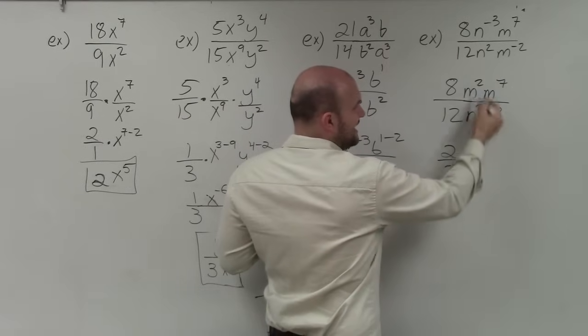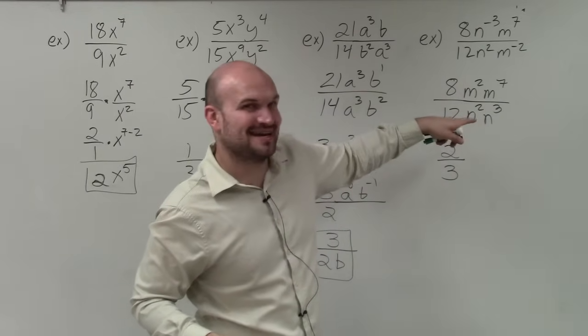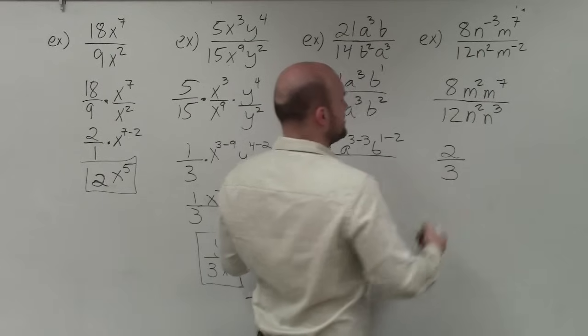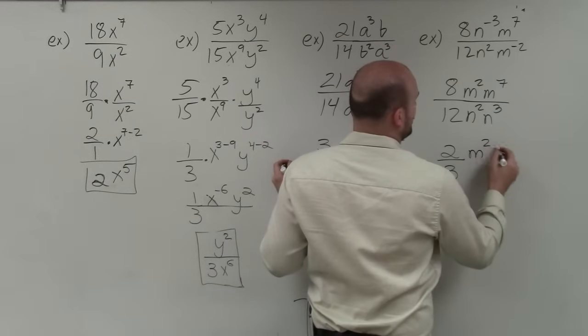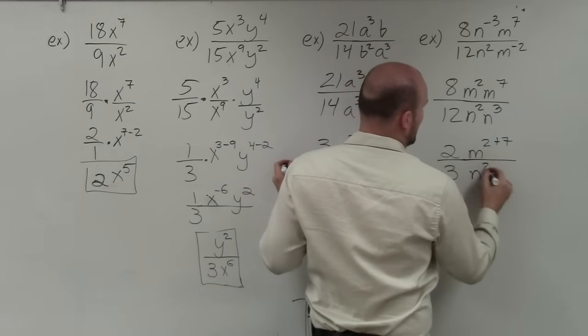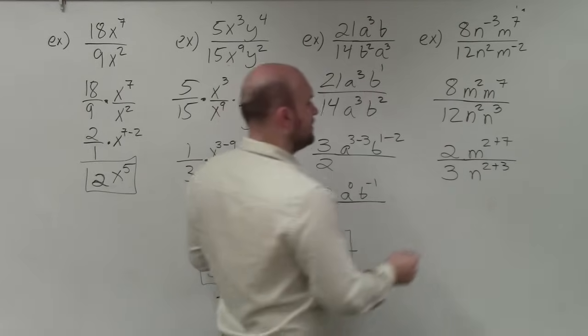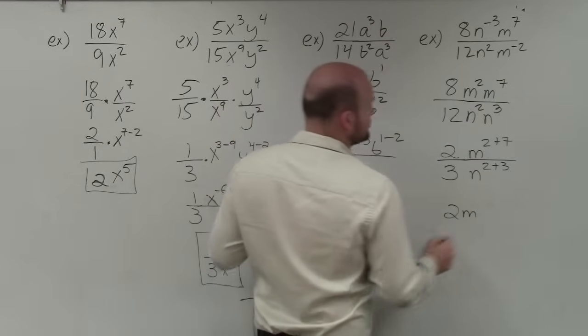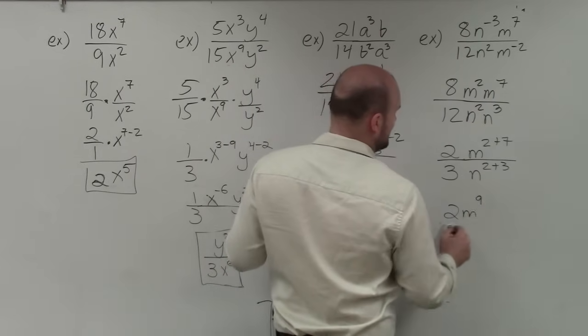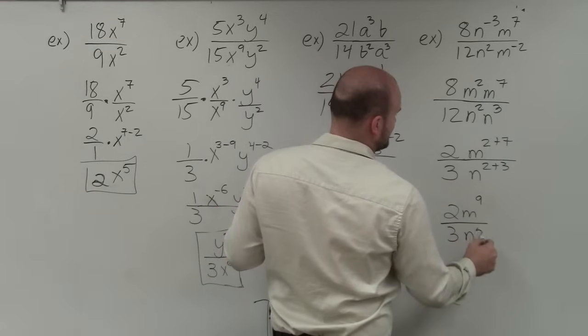Now, I can't use the quotient property like I did before because I don't have m and m's in the numerator and denominator. So I'm going to apply the product property, which tells me to, when I multiply two exponents with the same base, I am going to add their powers. So now, I have 2 thirds, m to the 2 plus 7 is going to be 9, all over 3, n to the 2 plus 3 is going to be n to the fifth.